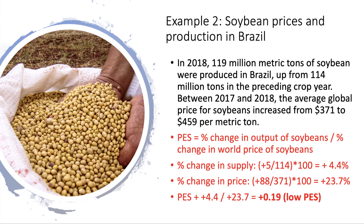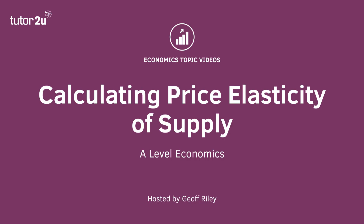Perhaps if global prices stay above $450 per ton, then in the next year we'd expect to see a sharper increase in output — in other words, an increase in the elasticity of supply. So there we go: two examples of how to calculate price elasticity of supply.